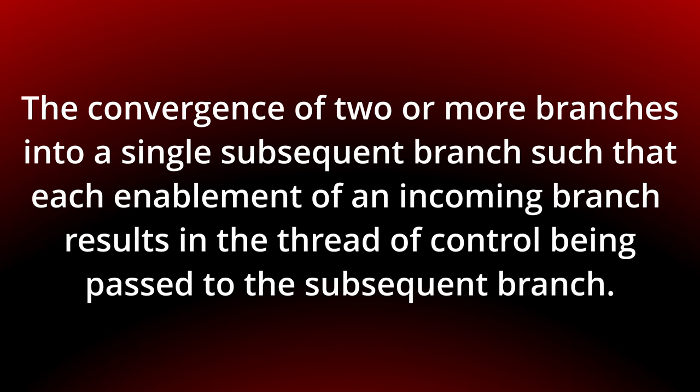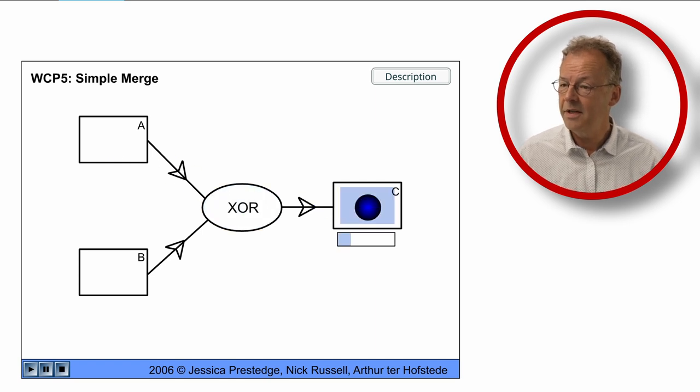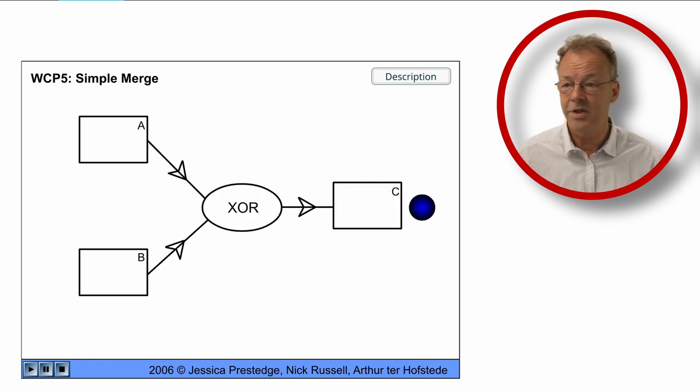You can see the behavior in the original flash animation. So here we have the simple merge, we come from task A and the XOR join immediately passes the token on to task C.